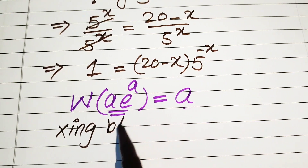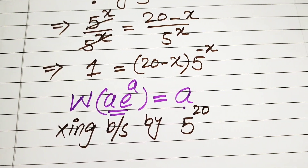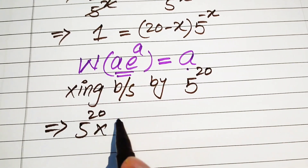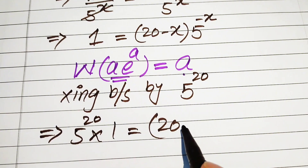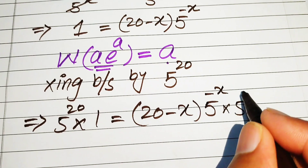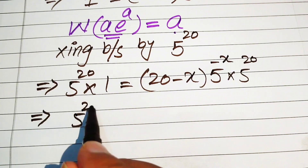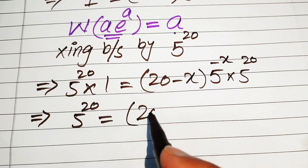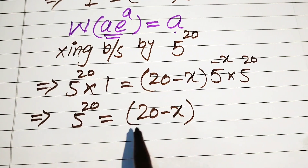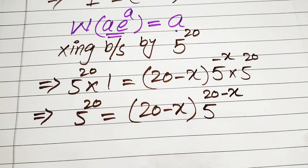We multiply both sides of the equation by 5 to the power of 20. This gives us 5 to the power of 20 equals 20 minus x into 5 to the power of minus x times 5 to the power of 20. Since the bases are the same, we add the exponents, giving 5 to the power of 20 equals 20 minus x into 5 to the power of 20 minus x.